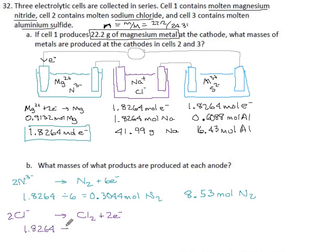1.8264, that's the electrons. Divide by two and you get your amount of chlorine. 0.9132 moles of chlorine gas, and its molar mass is 70.90. 0.9132 times 70.90. And we get 64.7.